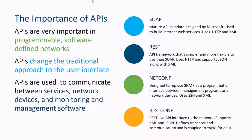Popular APIs include SOAP, which is a mature API standard designed by Microsoft and used to build Internet web services — it uses HTTP and XML. There's also REST, which is an API framework that's simpler and more flexible to use than SOAP, and uses HTTP while supporting JSON along with XML. And there's NetConf, which was designed to replace SNMP as a programmatic interface between management programs and network devices — it uses SSH and XML.